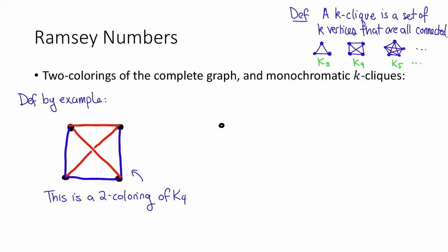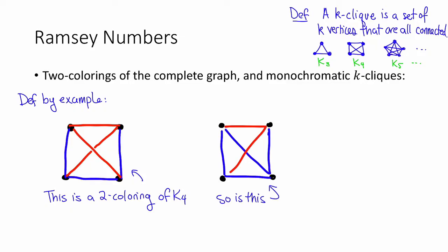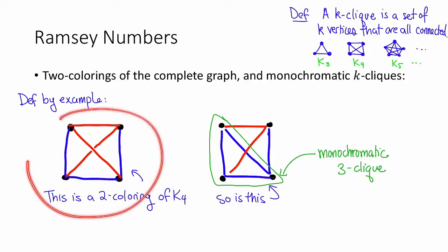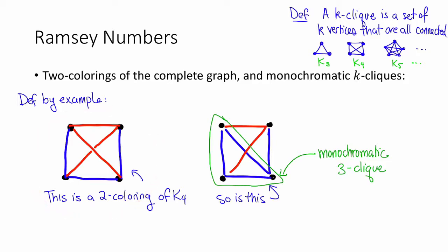As one more quick example, here's another coloring. So now we know what a two-coloring of the complete graph is. What is a monochromatic k-clique? Well, we already said what a k-clique was. Monochromatic just means all the same color, so either all blue or all red. For example, in this graph, this here is a monochromatic three-clique, a monochromatic triangle. On the other hand, in this coloring here, there is no monochromatic three-clique.